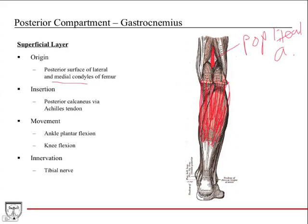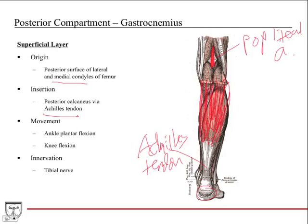The gastrocnemius originates from the posterior surface of the lateral and medial femoral condyles, with a medial and lateral head. It inserts onto the posterior calcaneus via the Achilles tendon, which is shared with the soleus. Contraction pulls the foot downward — ankle plantar flexion — giving the step-off movement when getting out of bed. Since it crosses the knee joint, it also assists a little with knee flexion. Innervation is the tibial nerve.